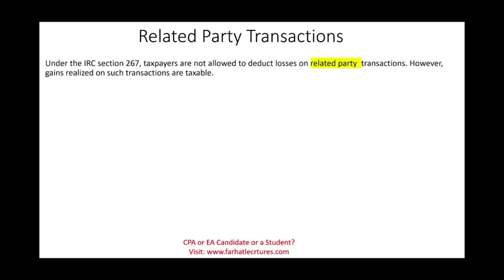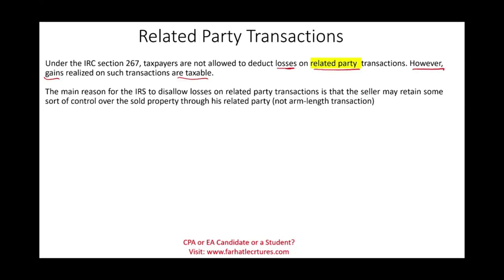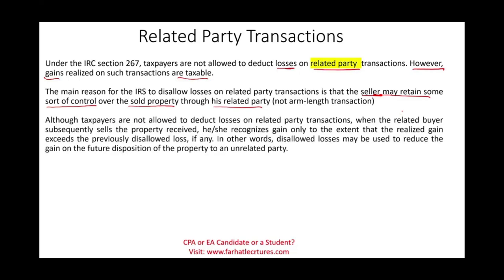Under Section 267, taxpayers are not allowed to deduct losses on related party transactions. However, if you generate gains, the IRS loves it — you will pay taxes on those gains; they are taxable. The main reason for the IRS to disallow losses is that the seller may retain some sort of control over the sold property through a related party. When transacting with a related party, the assumption is you control the other party, so you might be able to set the price and create the loss, or sell it while staying in control of the asset.